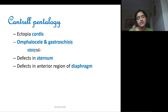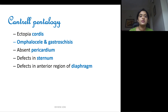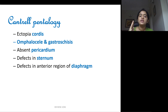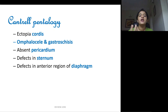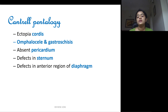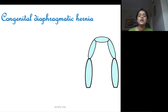Cantrell's pentalogy is a cluster of clinical conditions: you will get ectopia cordis, omphalocele, absent pericardium, defects in the sternum, and a defect in the anterior region of the diaphragm. If all these come together, you call it Cantrell's pentalogy.